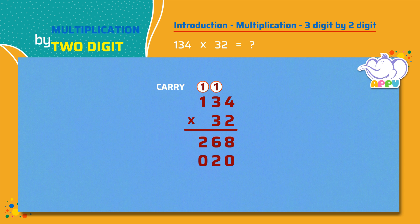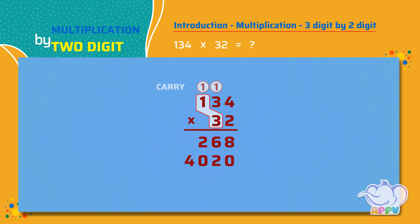We multiply the number in the hundreds place by three, which is one times three equals three. Then add the carry to get three plus one equals four. We write four in the thousands place. Lastly, we add the numbers.